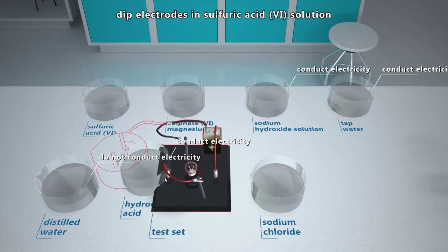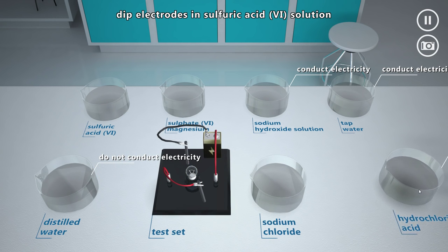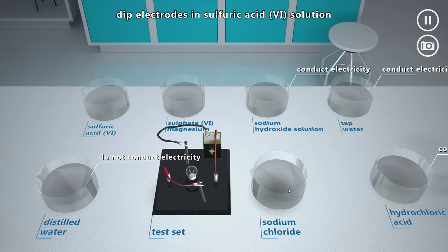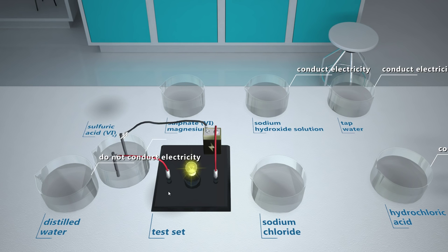Now let's try with sulfuric acid solution. You have just proved that aqueous solutions of acid conduct electricity. We can therefore include them in the group of electrolytes.